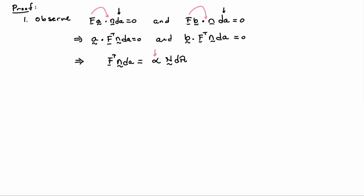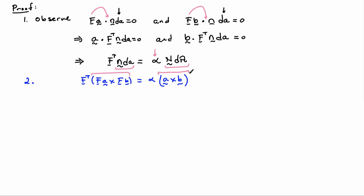Now I'll plug in for little n D little a, so that becomes FA cross FB, and big N D capital A becomes A cross B. I'll introduce a third vector C, where C equals A cross B, which we also know is just capital N D capital A, but it's nicer to call it C for now. I'm going to dot both sides of this expression with C.